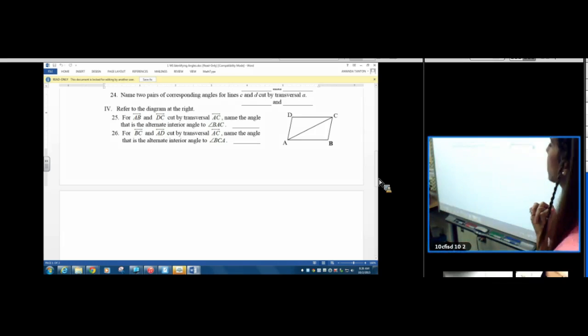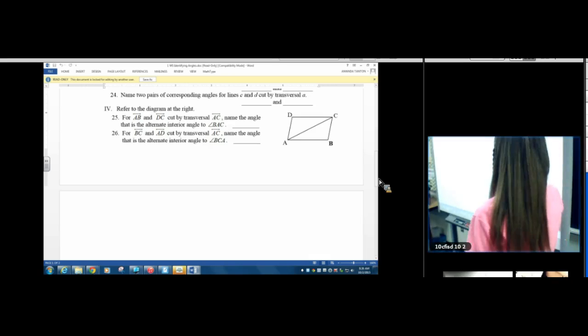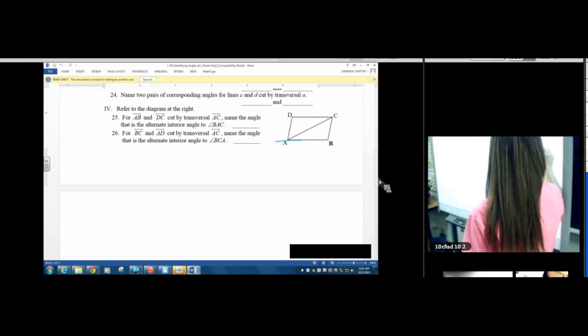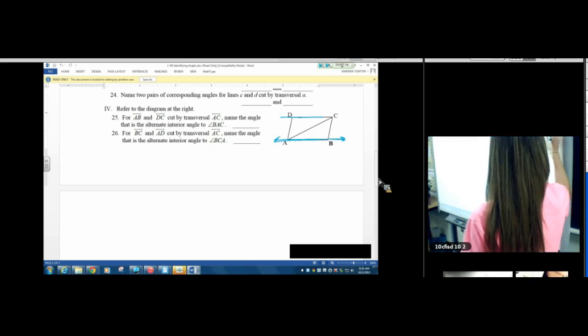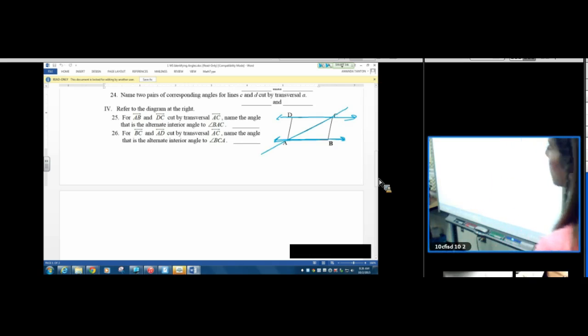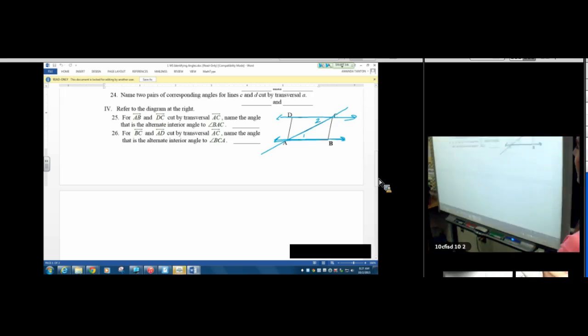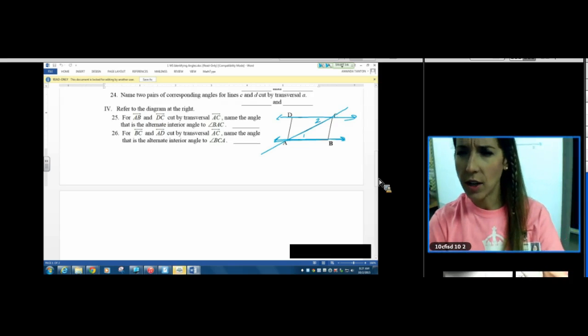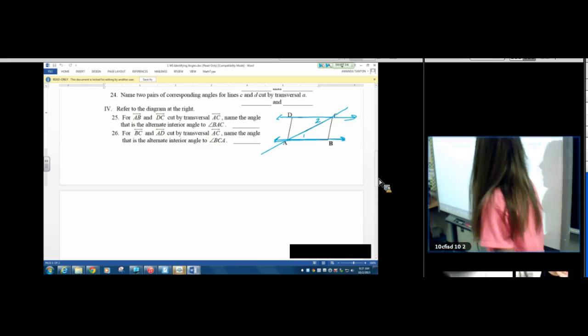So hopefully when you did all 26 of these homework problems, you have these names down and you can say them in your sleep. That was the goal. Okay, we're looking at 25 and 26. Refer to the diagram at the right. For AB and DC cut by transversal AC, name the angle that's alternate interior to BAC. So there's BAC, angle 1, alternate interior would be this angle right here, DCA. So those are alternate interior angles, angle 1 and angle 2.